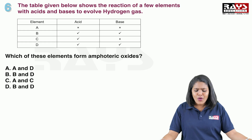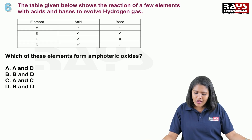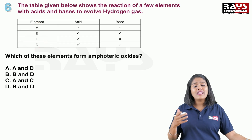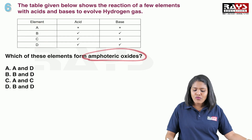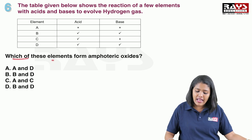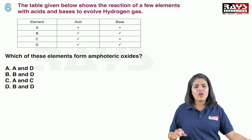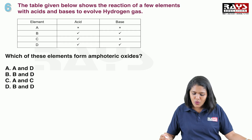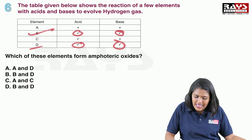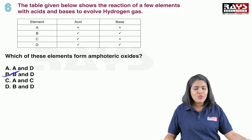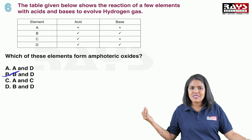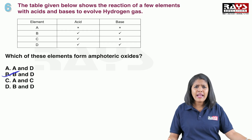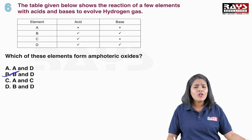The next question: the table shows the reaction of a few elements with acids and bases to evolve hydrogen gas. Which of the following elements forms amphoteric oxides? Amphoteric oxides react with both acid and base. Looking at the table, the elements that react with both acid and base are B and D. The correct option is option B. Amphoteric oxides show both acidic and basic nature. Examples include aluminium oxide and zinc oxide.